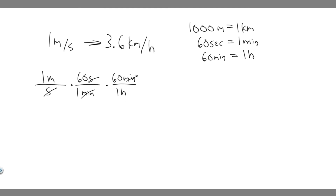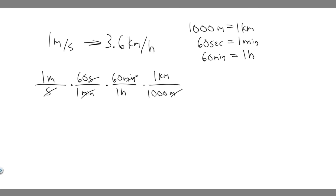The denominator is done — we have it in hours, which is what we want. But now we need kilometers instead of meters. Since meters is on top, we write it on the bottom so it cancels. There are 1,000 meters for every one kilometer, so the meters cancel and now we have it in kilometers per hour.